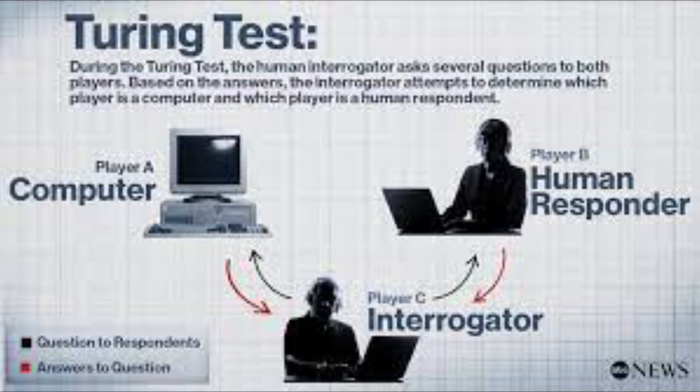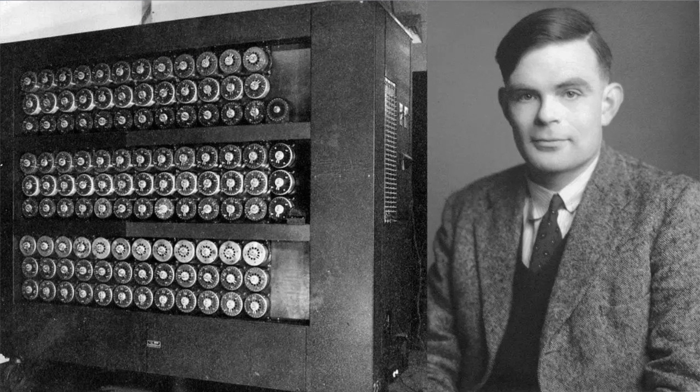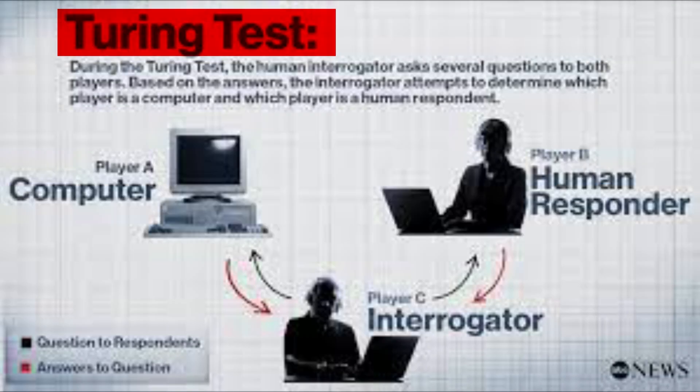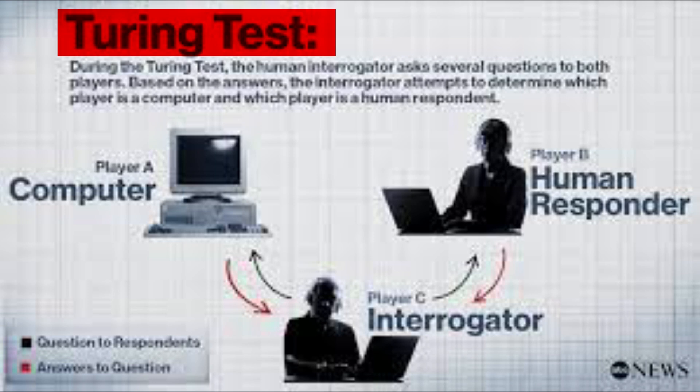Okay, here's a cool tidbit. One famous benchmark for achieving human-level intelligence is the Turing test, proposed by Alan Turing. The test asks if a machine can converse with a human in a way that's indistinguishable from another human. Passing this test would be a major sign that we've cracked the code of general intelligence.